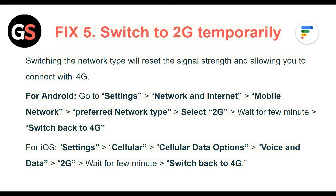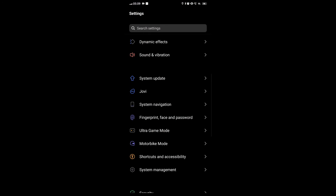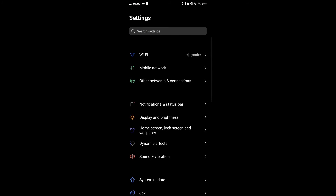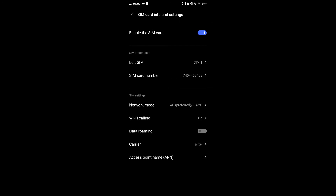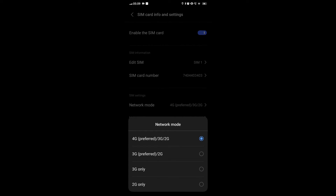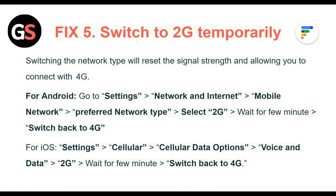Fix 5: Switch to 2G temporarily. Switching the network type will reset the signal strength and allow you to reconnect with 4G. For Android, go to Settings then Network & Internet then Mobile Network, then Preferred Network Type, select 2G, wait a few minutes, and switch back to 4G.